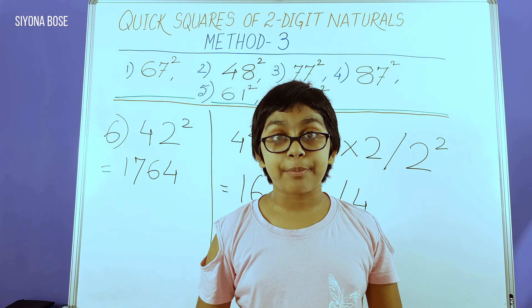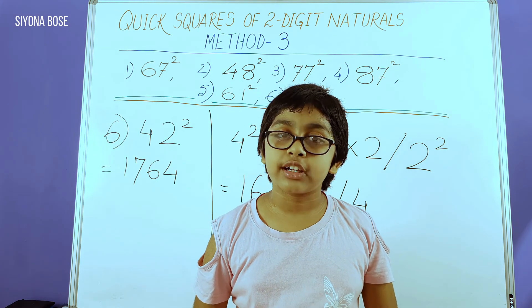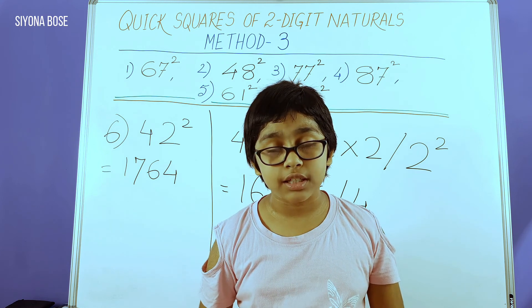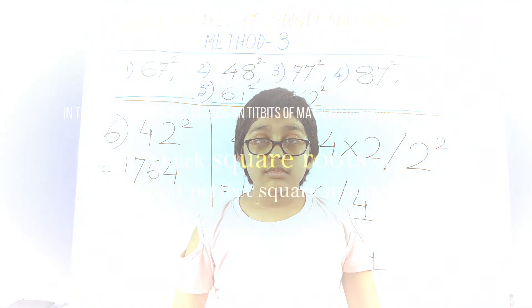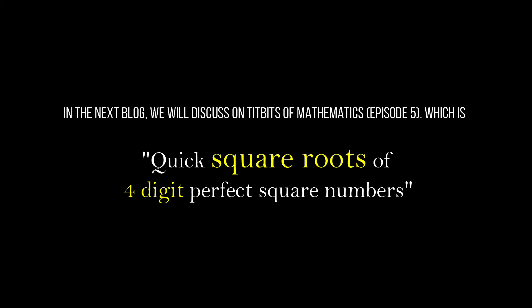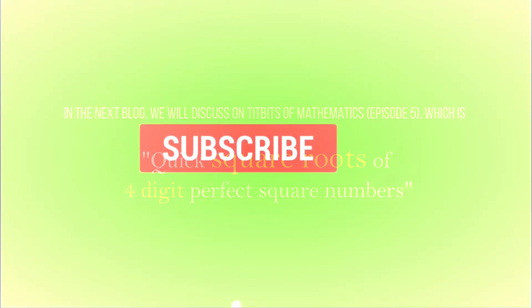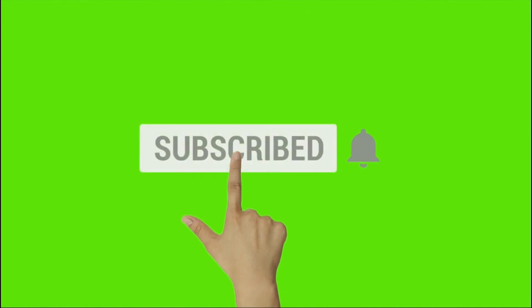I hope you liked this episode. Please like, share, and subscribe to my channel. Thank you. In the next video, we will discuss Tidbits of Mathematics episode 5, which is Quick Squares on 4-Digit Perfect Square Numbers. Please subscribe to my channel and press the bell icon.